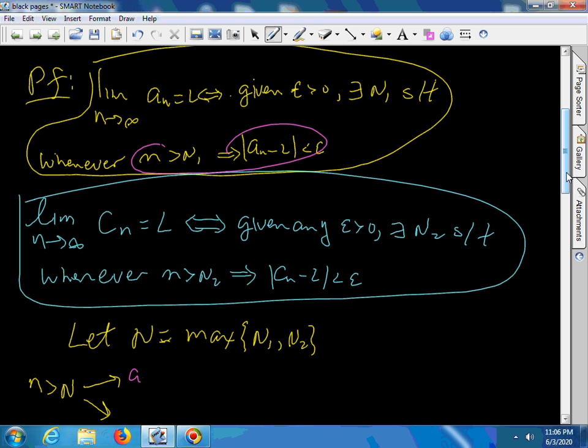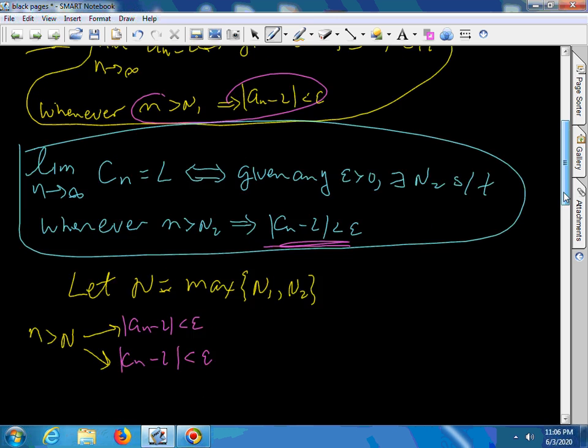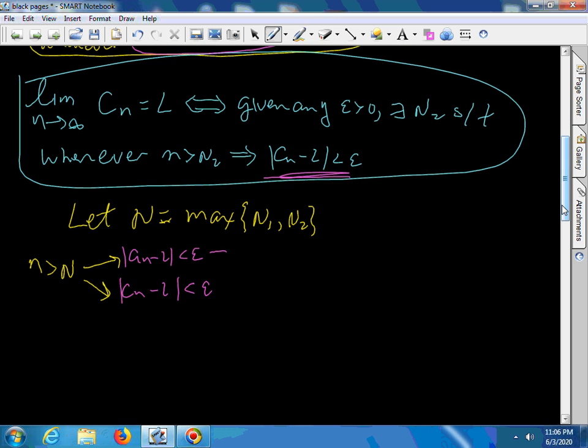We have that aN minus L is less than epsilon, and we have this statement here, that cN minus L is less than epsilon. But this statement here is the same as negative epsilon, or L minus epsilon is less than aN, which is less than L plus epsilon. Likewise, the second statement tells me that L minus epsilon is less than cN, which is less than L plus epsilon.